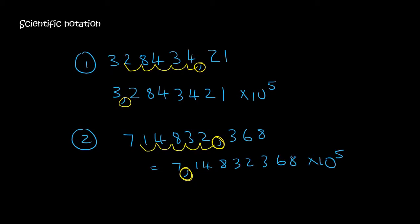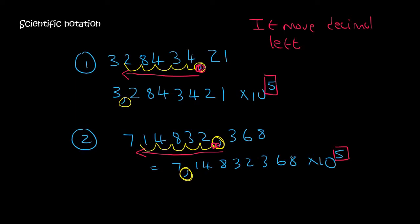Now I need to explain something important. What have we been doing this whole time? We keep moving the decimal from one point, and we're moving it left. If you move it left like that, then this number must always be positive — that's what we've only done up until now. I haven't showed you any that moved to the right. So if you move the decimal left, then you would say times 10, and this number over here would always be a positive number.